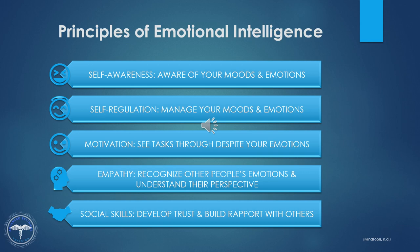The fourth principle is empathy — the ability to recognize other people's emotions and understand their perspectives. Some people call this the fundamental people skill. The fifth is social skills. Even if you are not a natural people person, it is possible to develop better social skills, which allows you to develop trust and rapport with people. We will talk a little bit later about some specific things you can do to help develop better social skills.